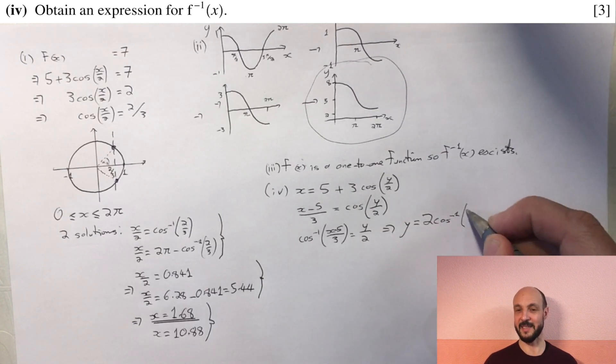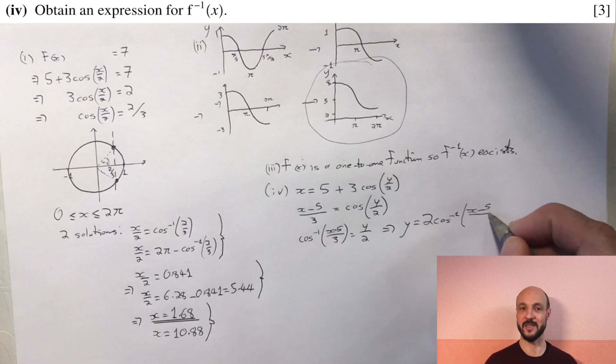So to write it in the original form they gave us in the question, the inverse function takes x to 2 arc cos of x minus 5 over 3.